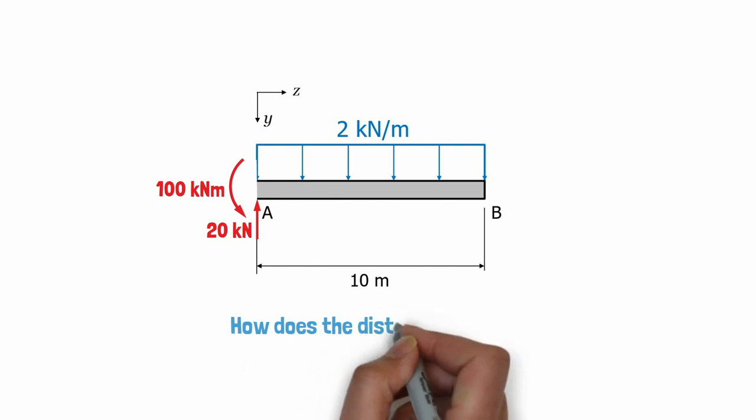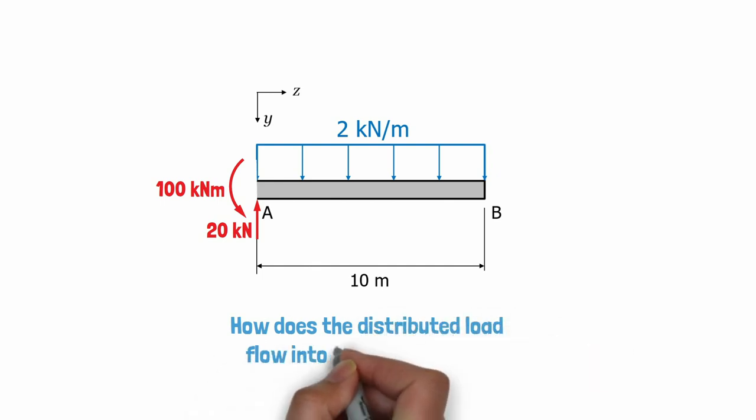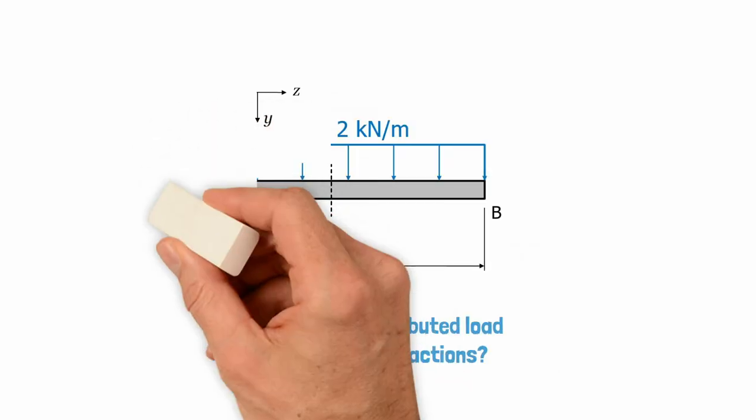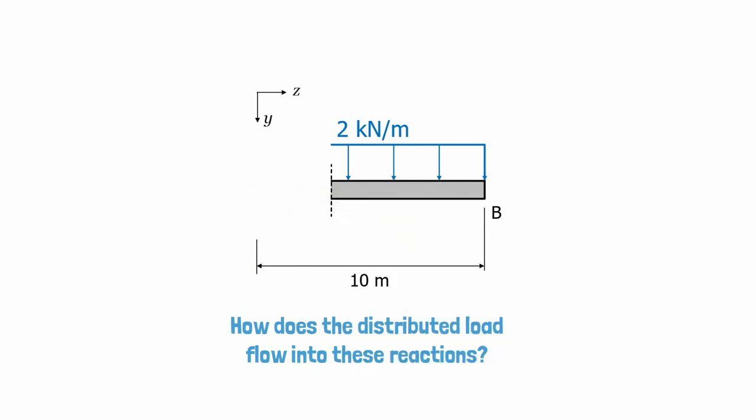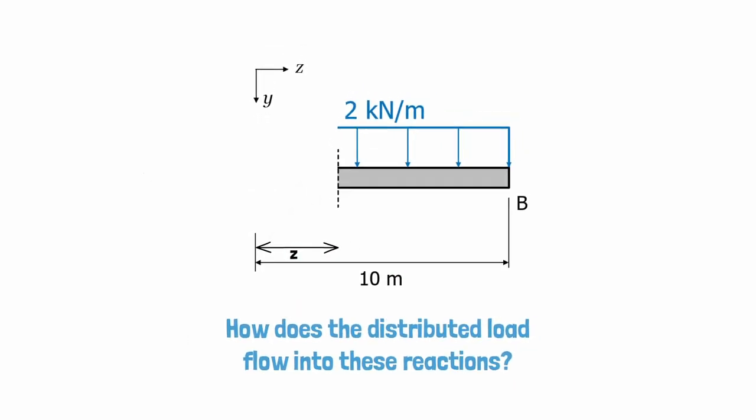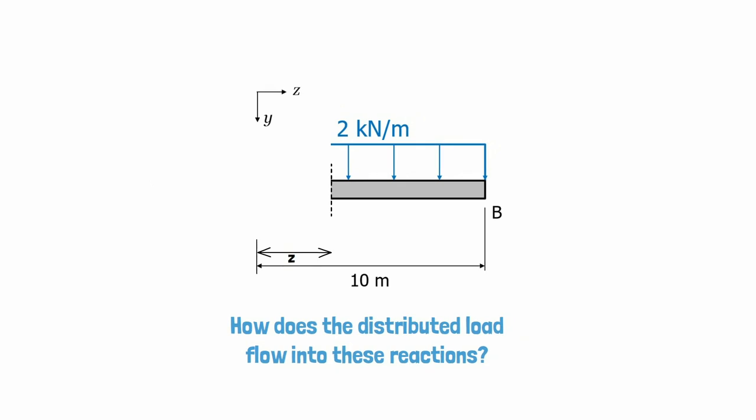What we want to do is examine how the distributed load flows through the structure to the support reactions. To do this, we need to cut into the beam to expose the internal forces and moments. We will do this at an arbitrary distance Z along the beam.